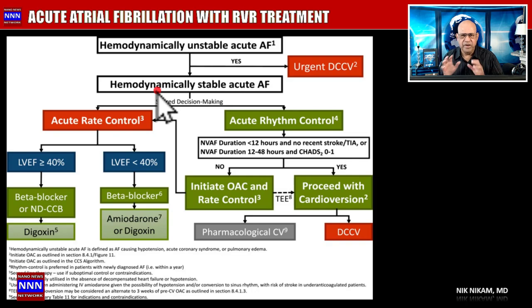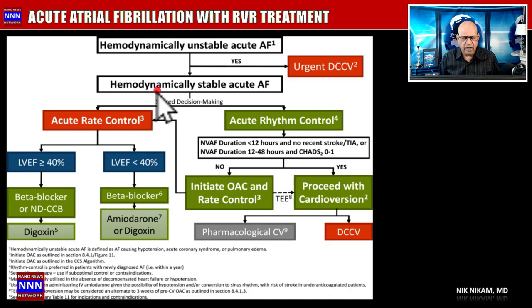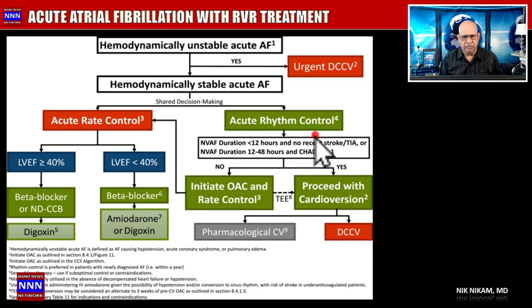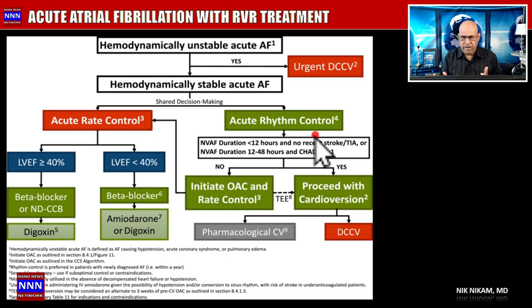For the hemodynamically stable patient in the emergency room — mild sweating, mild shortness of breath, blood pressure okay, alert, saturation 94-96% on room air — we have two options: rate control or rhythm control. Managing atrial fibrillation is complex. It involves rate, rhythm, left ventricular function, quality of life, prognosis, and anticoagulation. There are multiple issues to address, but in the immediate phase we decide: rate control or rhythm control.